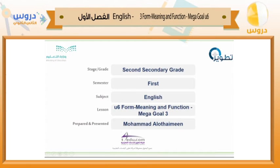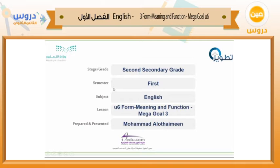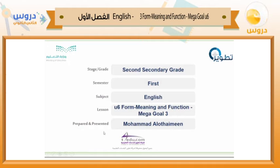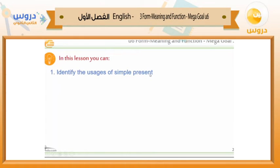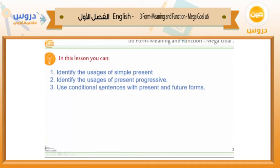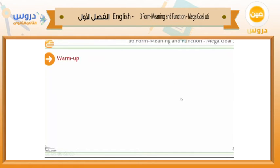In the name of Allah the most gracious the most merciful. Assalamu alaikum warahmatullahi wabarakatuh. Today we have a new lesson for second secondary grade, first semester, English subject. Today's lesson is Unit 6 for meaning and function in Mega Goal 3 book. This lesson is prepared and presented by Mohammed Latini. In this lesson you can identify the usages of simple present, identify usages of present progressive, and also use conditional sentences with present and future forms.